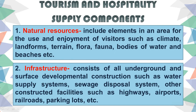The second supply component is infrastructure. Infrastructure consists of all underground and surface developmental construction — including water supply systems, sewage disposal systems, and other constructed facilities such as highways, airports, railroads, and parking lots. Infrastructure helps make a place more accessible and convenient for tourists. When we travel, we need well-maintained roads, proper airports, and adequate parking spaces to make our travel convenient.